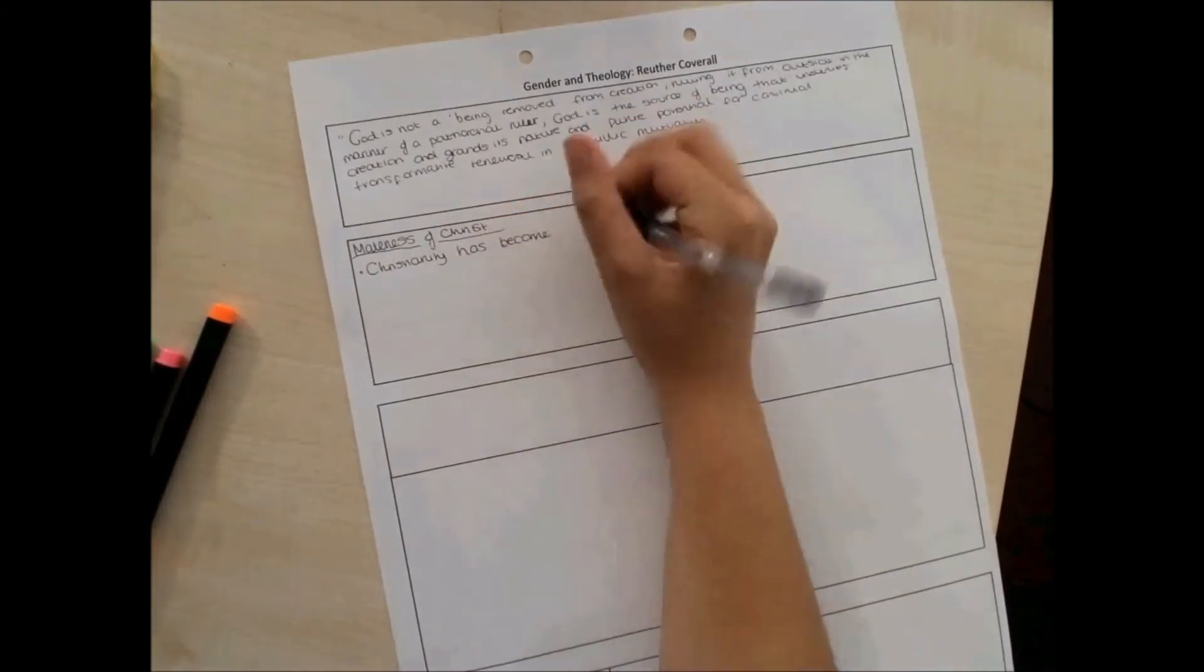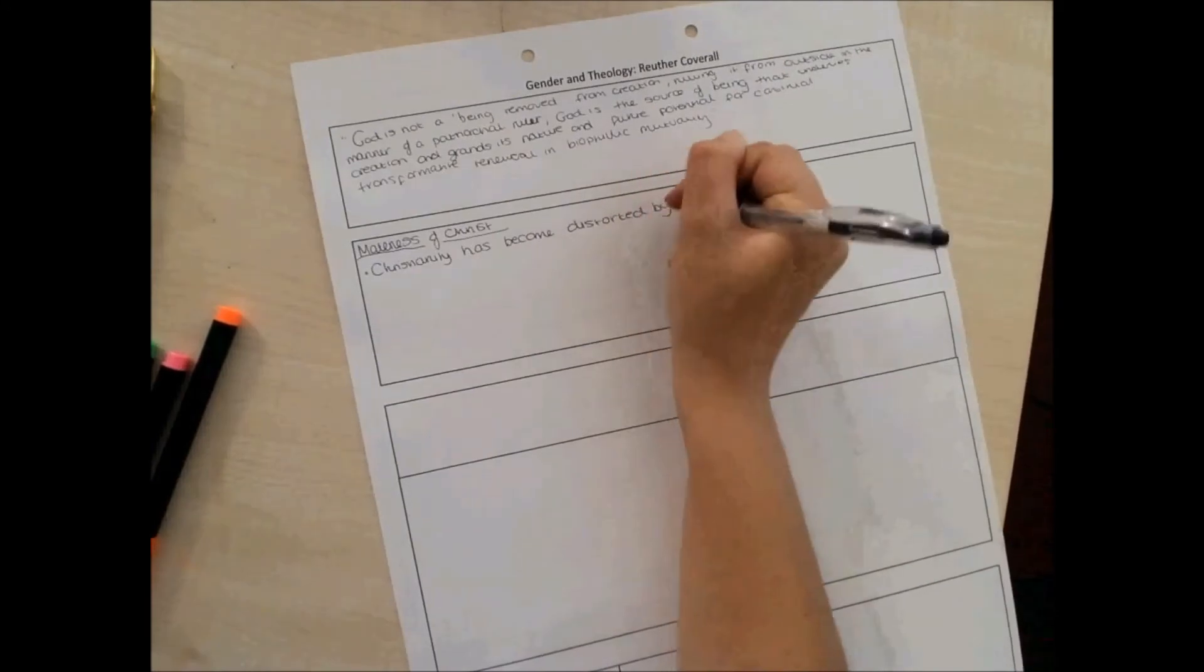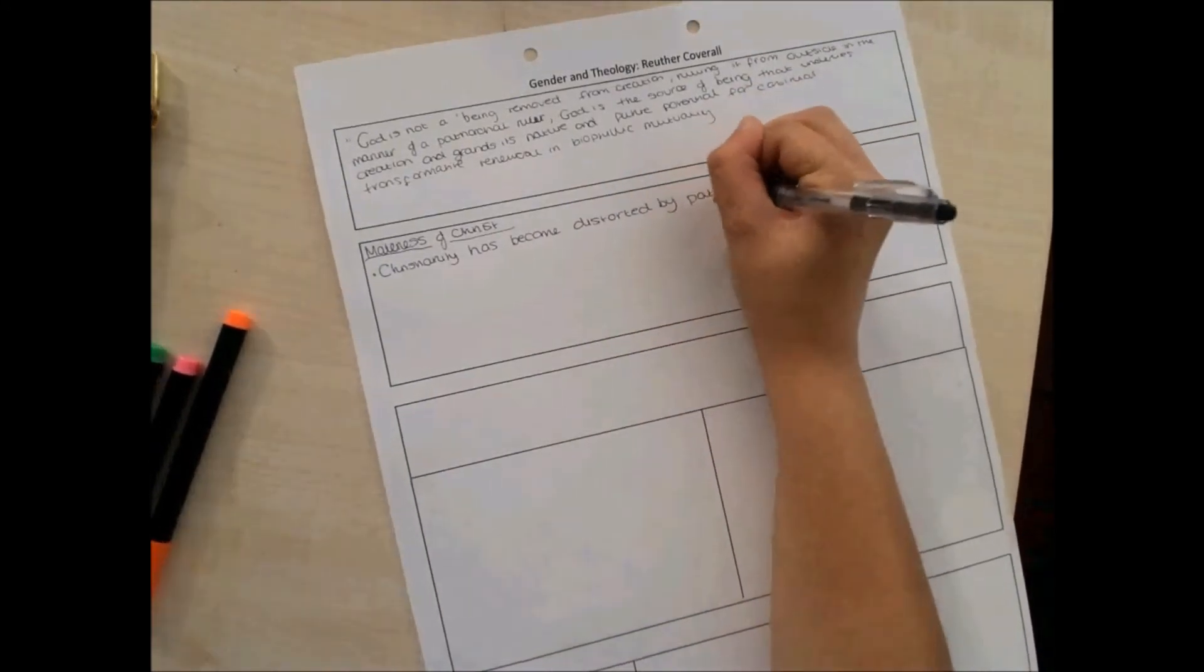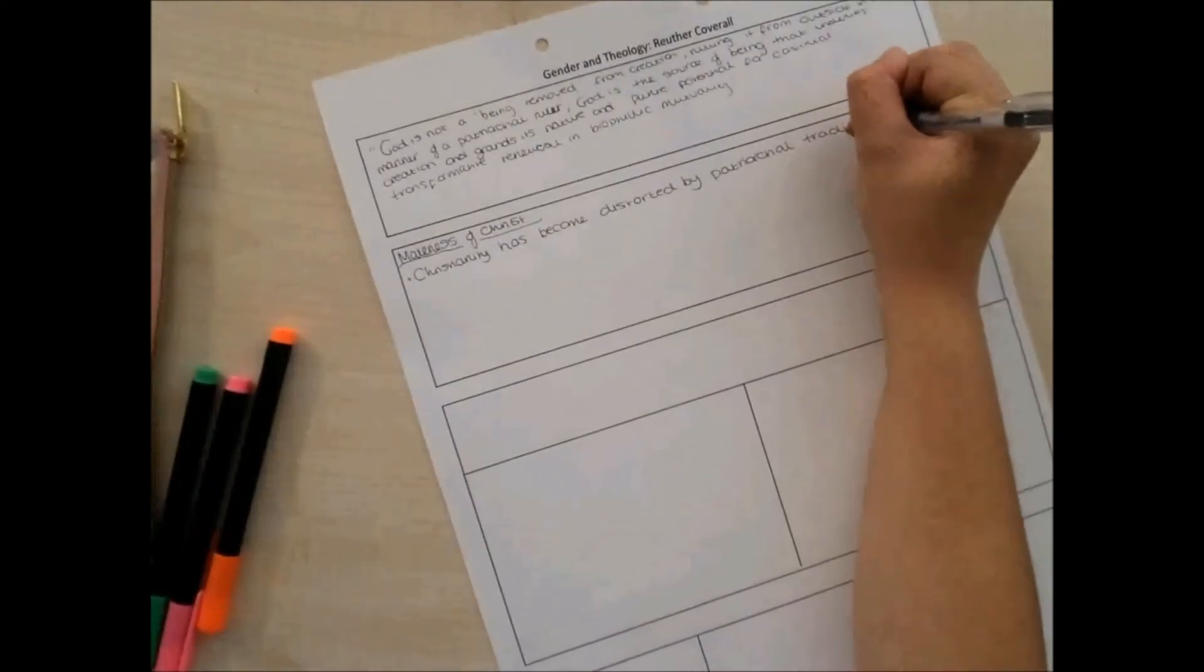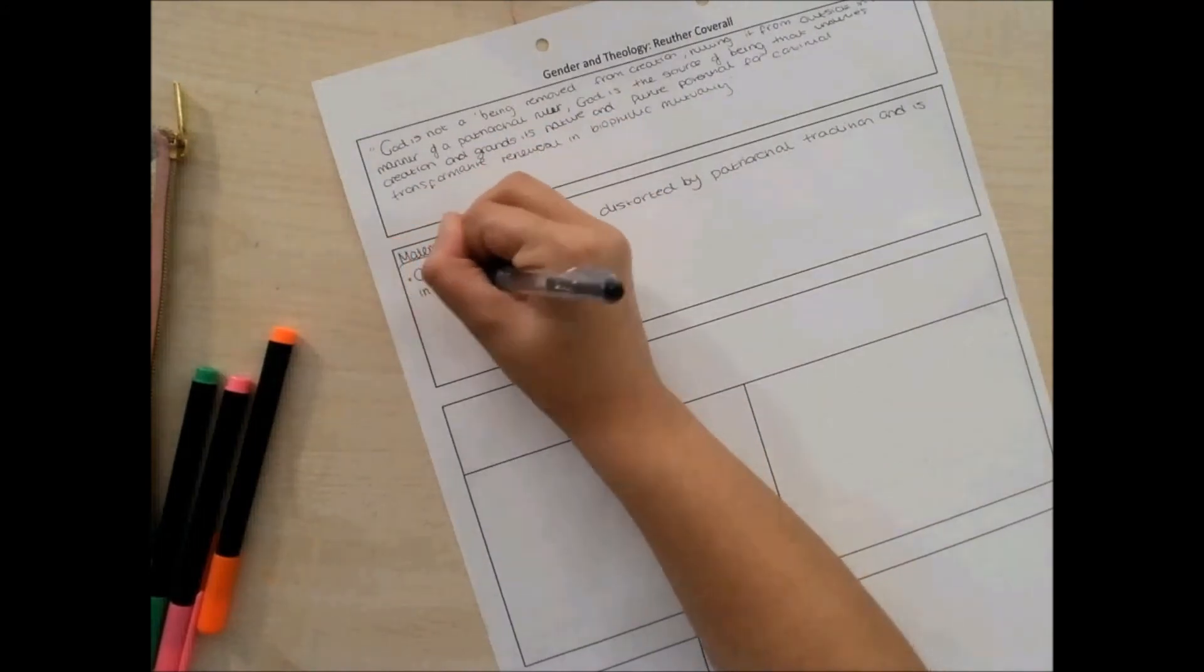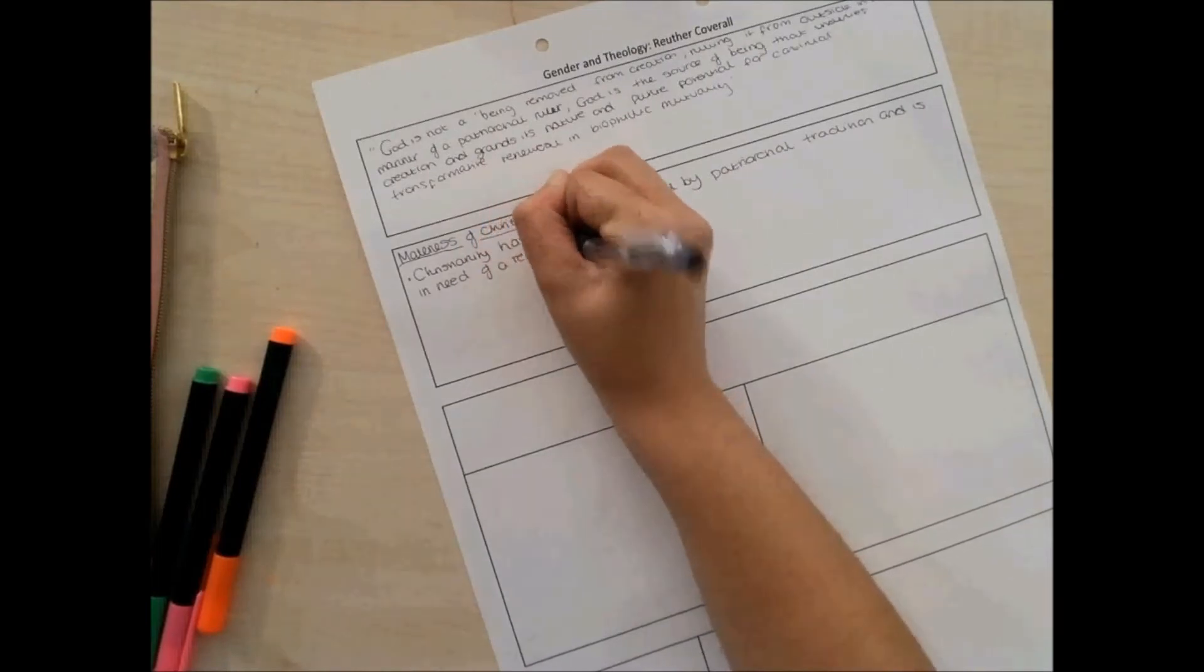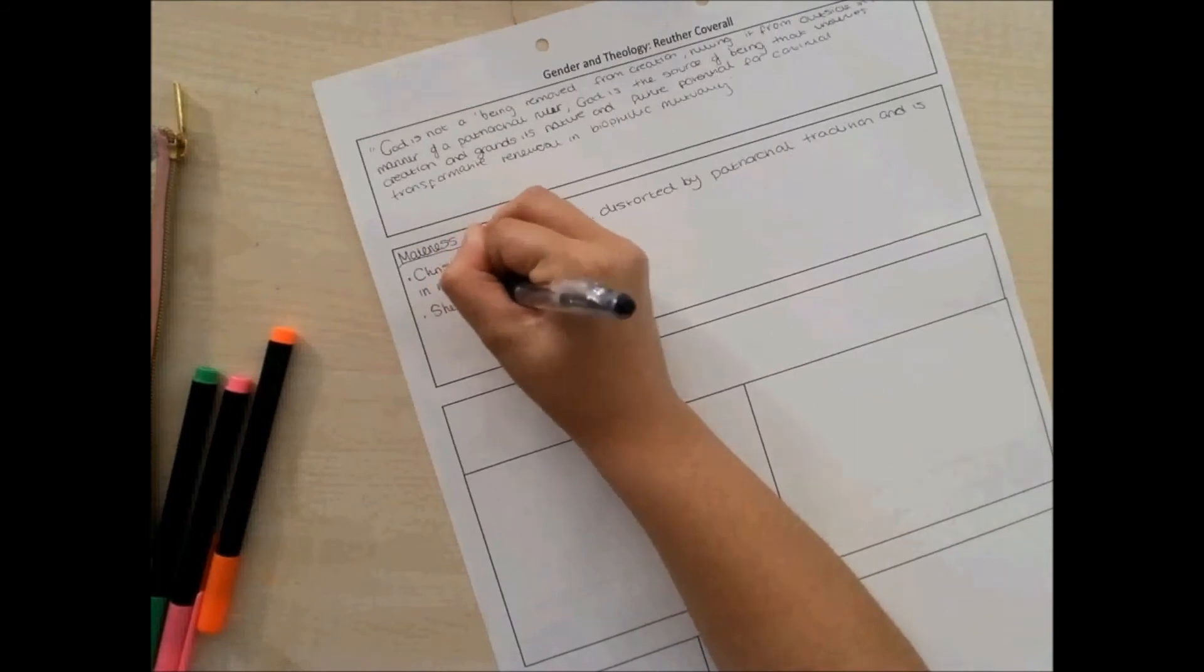She believes the Catholic Church's teachings on women's ordination and view on abortion have been influenced and distorted by patriarchy. So, what she's arguing there is that the church's teachings have been distorted by patriarchy. Don't forget, patriarchy is a male-dominated society who govern laws. She also believed patriarchy has shaped Christian thought about God, which too needs to be challenged. So, only those three points to go in that box, lots of space.